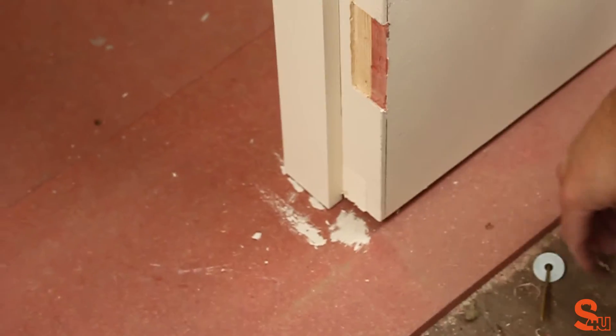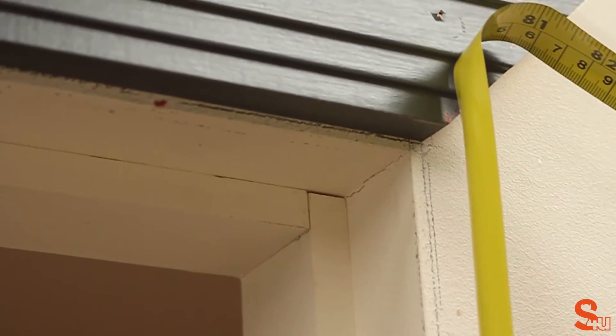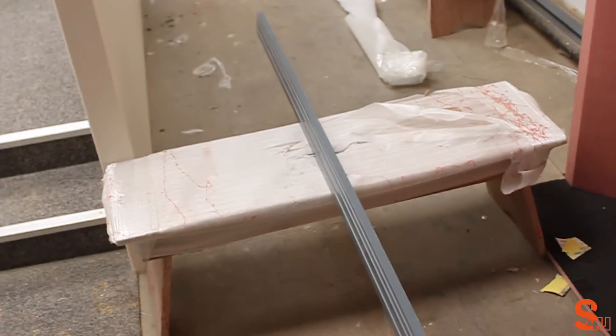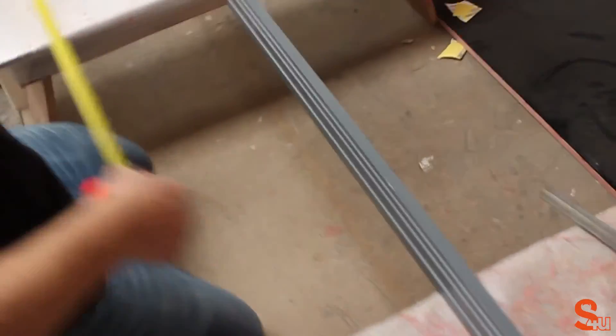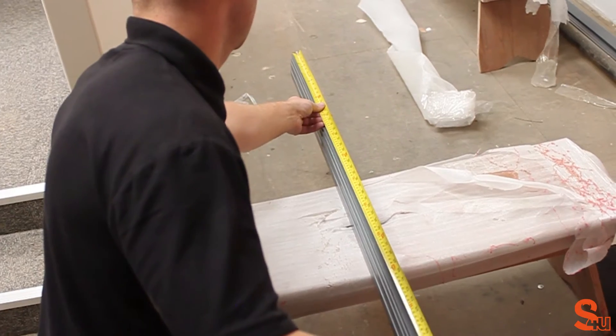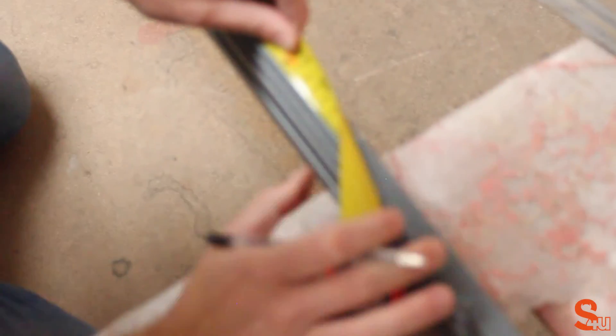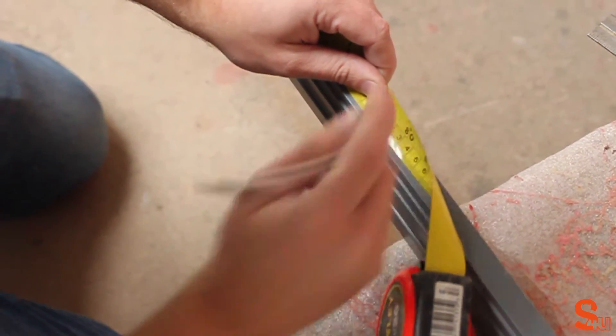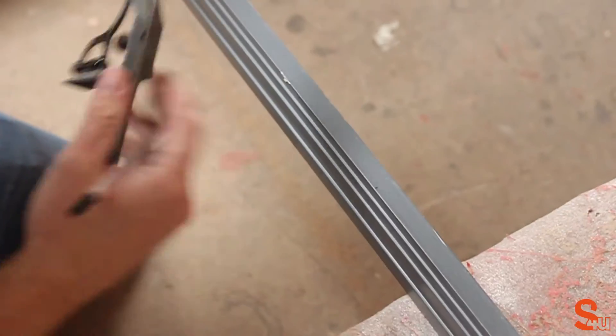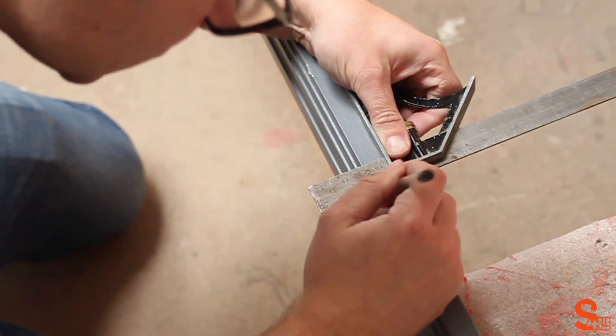So the final piece that we need to put on, we need to measure from the bottom of the head piece to the floor. So we get our tape measure out and make a note of that measurement. And on our final piece, we need to cut at a particular point. Make sure we mark it using the bevel. Make sure that we show the direction that we're cutting.